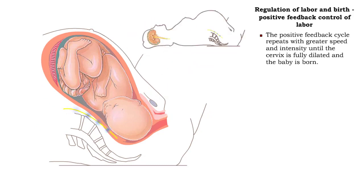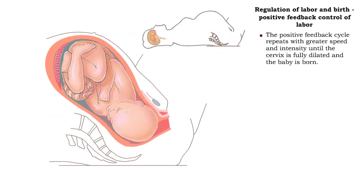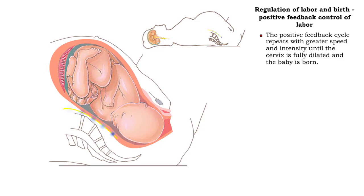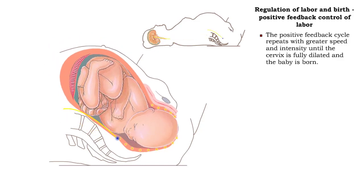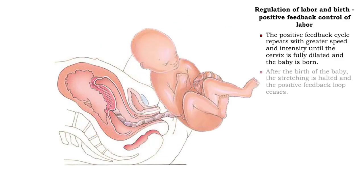The self-amplifying nature of the positive feedback loop is repeated over and over with increasing intensity until the baby is born. After the birth of the baby, the stretching is halted and the positive feedback loop ceases.